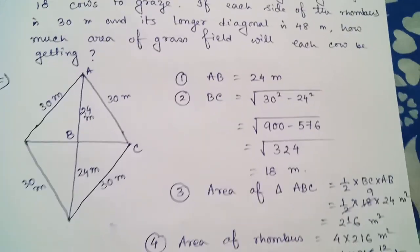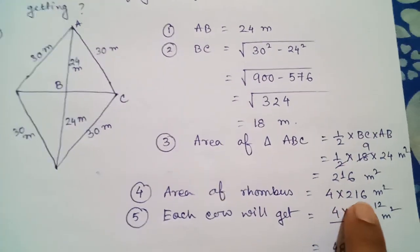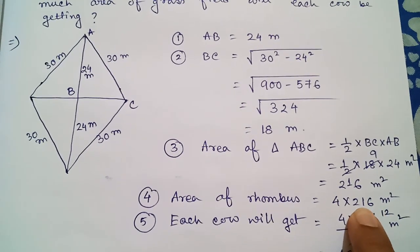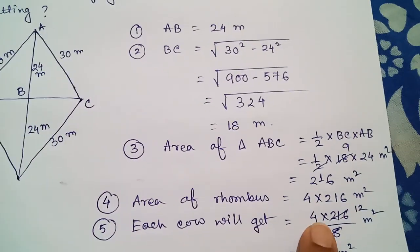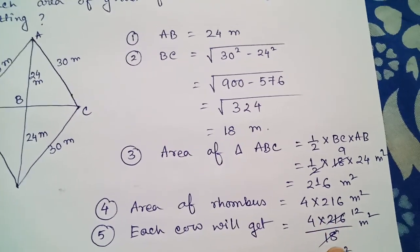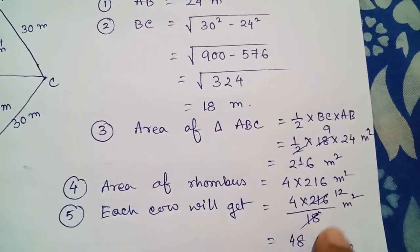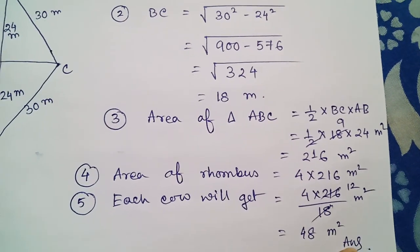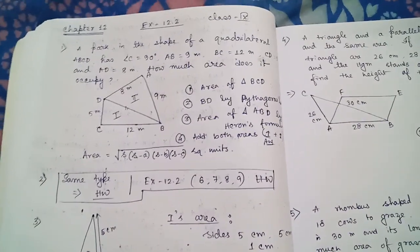The area of the whole rhombus = 4 × 216 = 864 square meters. Each cow will get 864 ÷ 18 = 48 square meters. That is the answer for question number five.